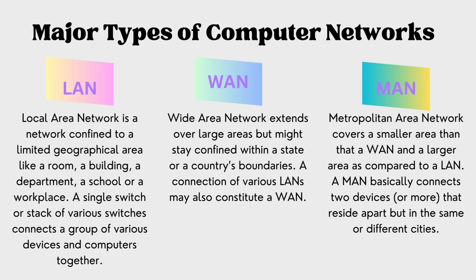Typically, a single switch or a stack of switches connects a group of devices and computers together in a LAN. A WAN, on the other hand, extends over a large area and might be confined within a state or a country. The internet is a collection of WANs, and sometimes a collection of various LANs may also constitute a WAN. A MAN sits between a LAN and a WAN in terms of size, covering a small area than a WAN and a larger area than a LAN — basically connecting devices in the same or different cities. A cable TV network is an example of a MAN.